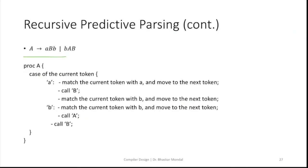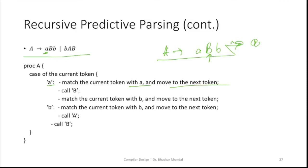If you have a set of rules like A → a B b and B → A B, then if the current token is 'a', you get the first production rule A → a B b. It will match the current token 'a' and move to the next token. Then it will call procedure B. B will have its own procedure body, call and return. Then it will match the current token with b and move to the next token.